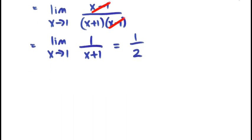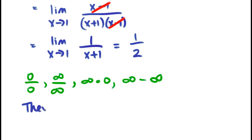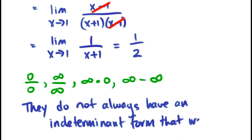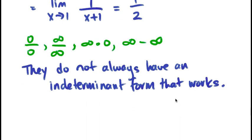So those forms, 0 over 0, infinity over infinity, infinity times 0, infinity minus infinity, are great forms. However, unfortunately, they do not always have an indeterminate form that works.